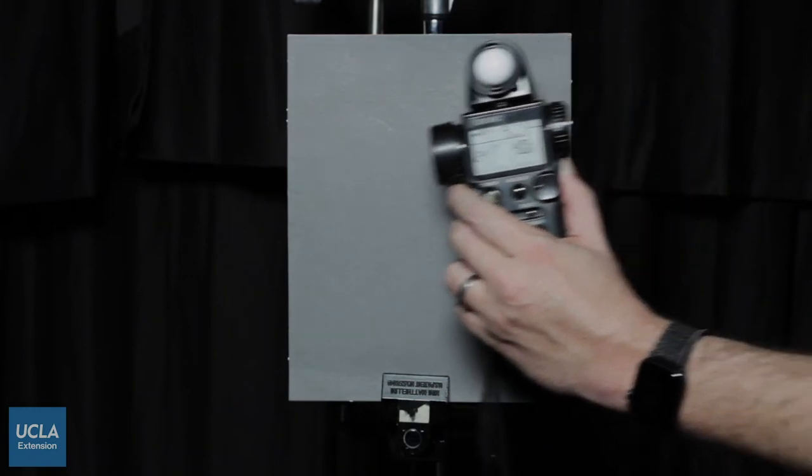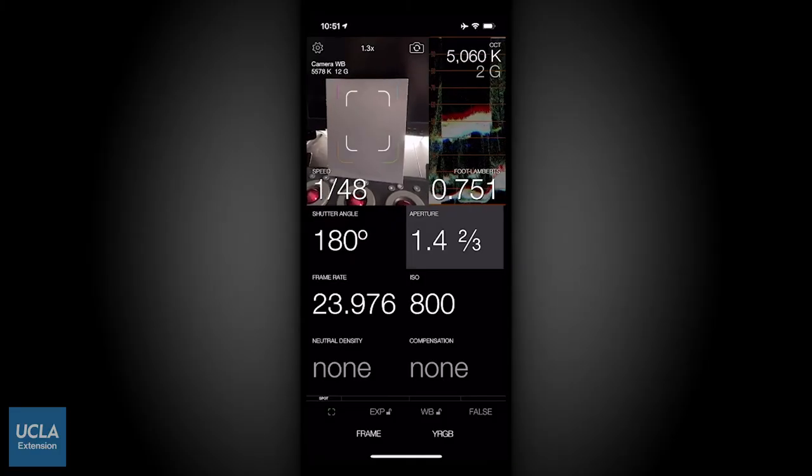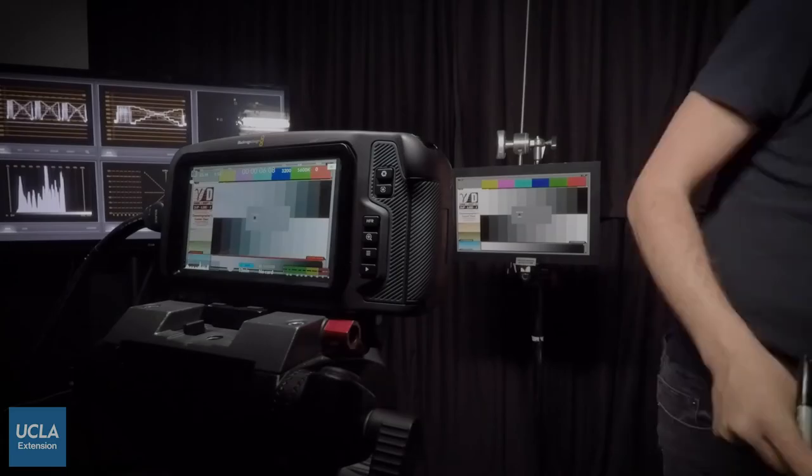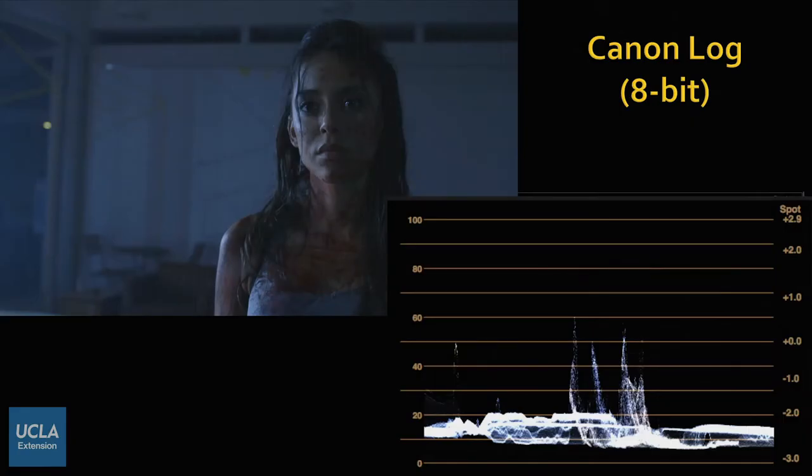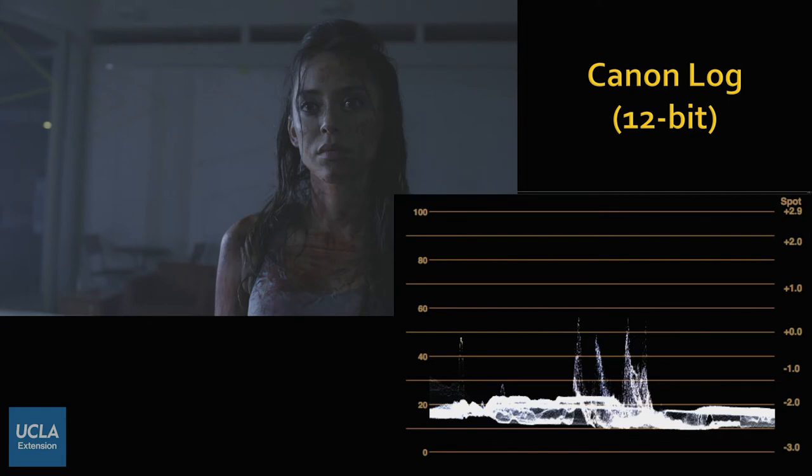If we understand the dynamic range, what does that mean for me as a cinematographer to help tell a story? Stuff like ISO, sensitivity, noise. How can I use different camera configurations, different camera settings to achieve a particular look?